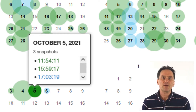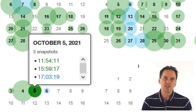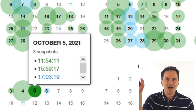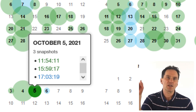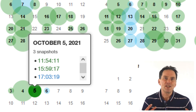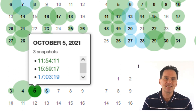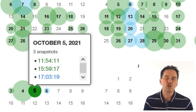Sometimes it archives the site more than once a day, and if it does that then it will show the time on that particular day that it archived the site, so you might have multiple times. You will need to select the latest date and possibly the latest time by clicking on the date that is highlighted and then selecting the latest time if shown.